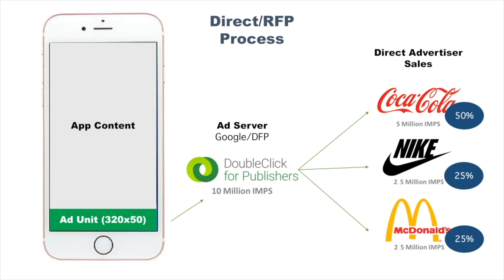The obvious disadvantage is that it's difficult to get in front of these people, especially if you're a small app. Good luck getting in front of Coca-Cola, Nike, and McDonald's. Even if you do get in front of them, there's no guarantee they'll actually buy. So you could end up with two and a half million impressions every month that go unsold — that's lost potential revenue. Really only a few very large apps and publishers are going to be able to sell out all of their inventory this way.